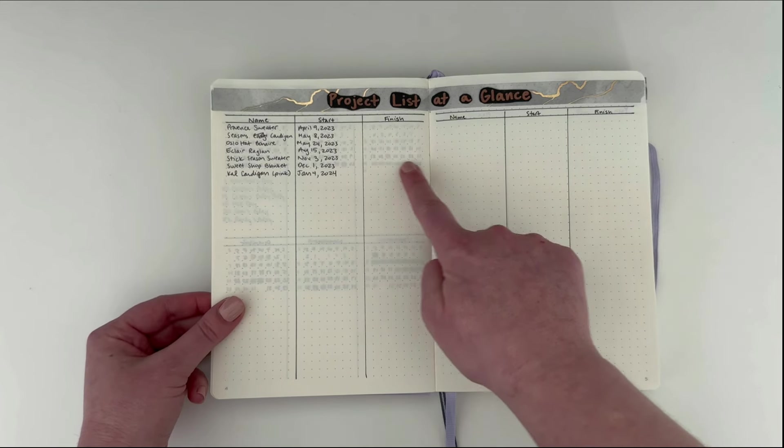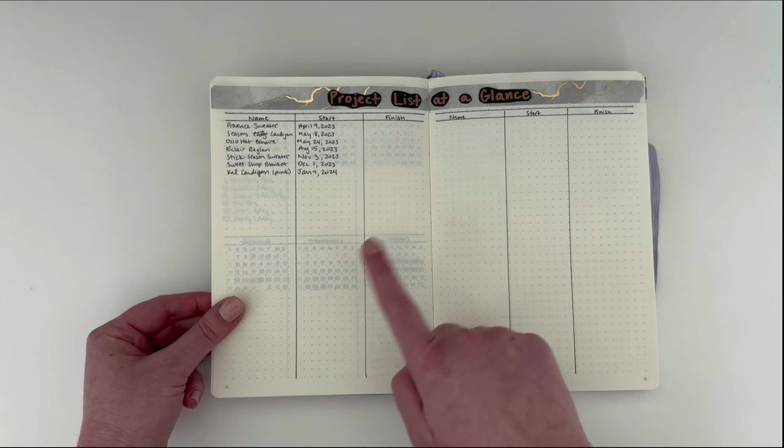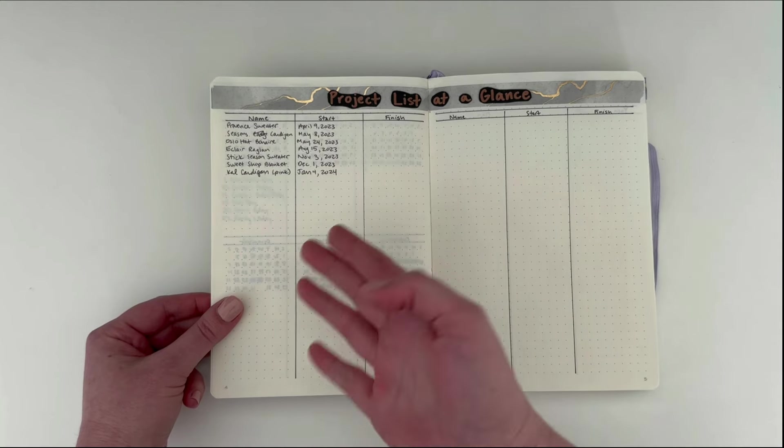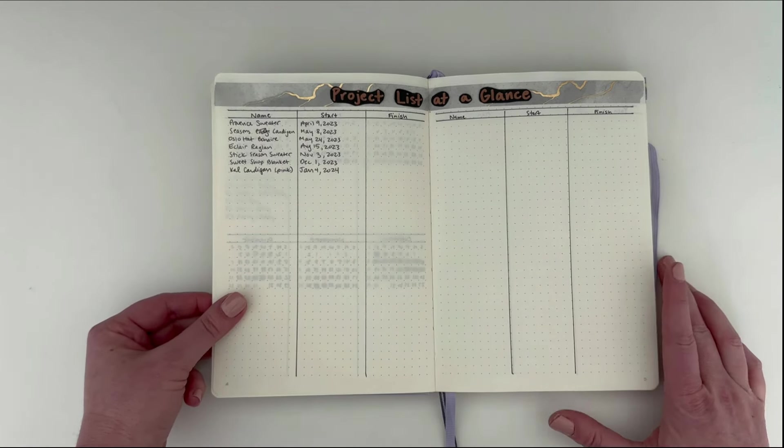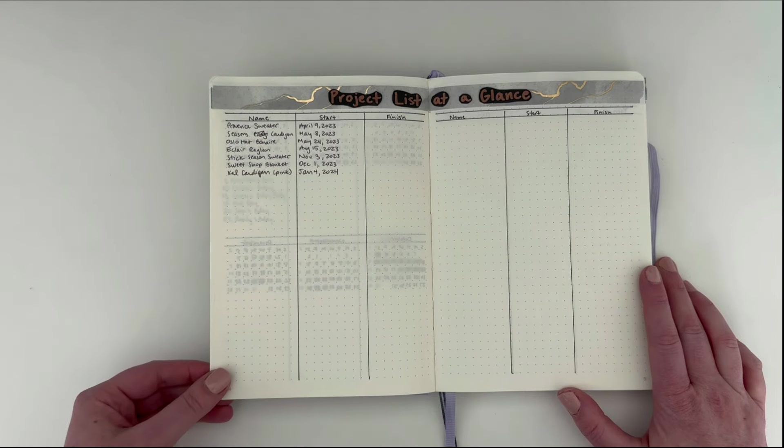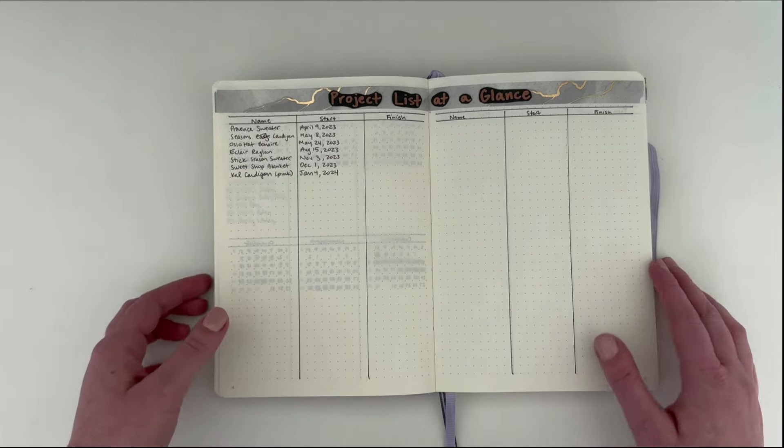If I frog something, I'm gonna write frogged. If I finish it, if it's a WIP at the end, or if it's frogged, that's where it ends up. And it's just exciting and interesting to see as time goes on what projects you've started and what got finished.